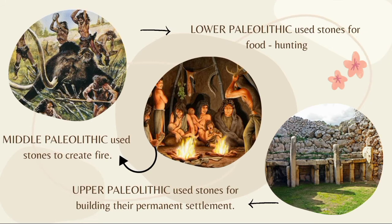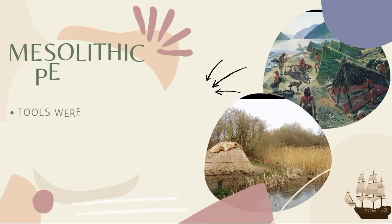For the Lower Paleolithic, humans typically used stone for food hunting only. During the Middle Paleolithic, stones were also used for creating fire. And lastly, for the Upper Paleolithic, stones were also used for building their own permanent settlements or houses.